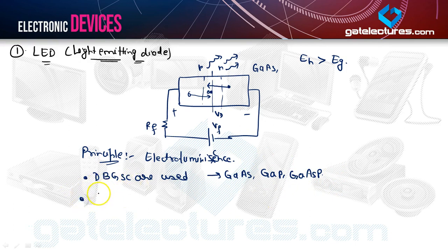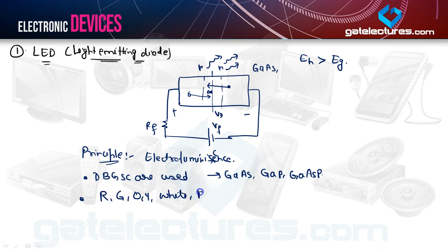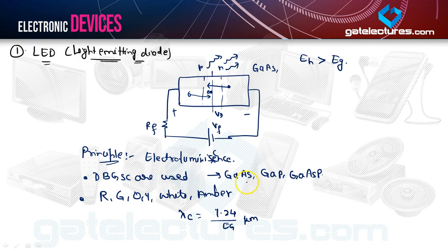In the visible region, lights emitted can be red, green, orange, yellow, white, or amber. We have a critical wavelength equal to 1.24 divided by Eg micrometers, where Eg is the energy bandgap. These are the parameters to consider before studying the light emitting diode. The energy of the photon needs to be greater than the energy bandgap — then only photons or light can be released.